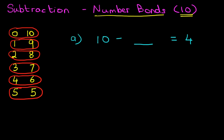So, 10 minus something equals 4. Basically, this number over here and this number here must equal 10. That's the number bonds. We're doing subtraction, but the two numbers together equal 10.